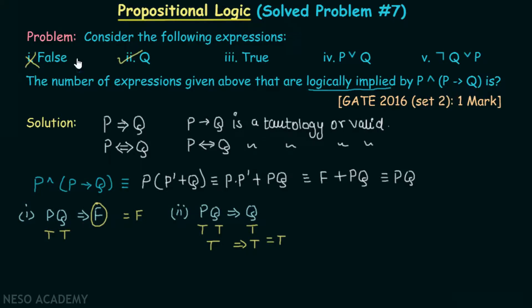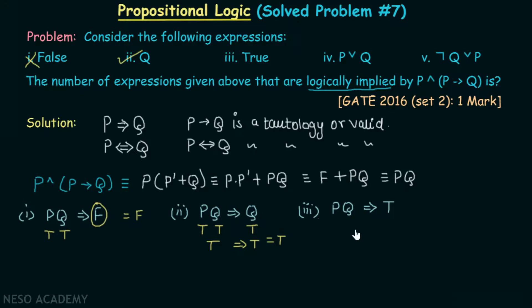Let's consider the third expression: does pq logically imply true? We already know that if the right side of an implication is true, we cannot make the whole expression false. Hence, this expression is also a tautology, so it is correct.